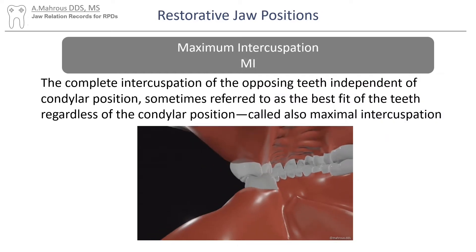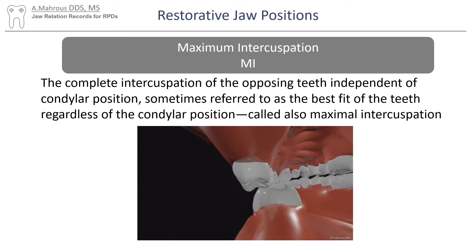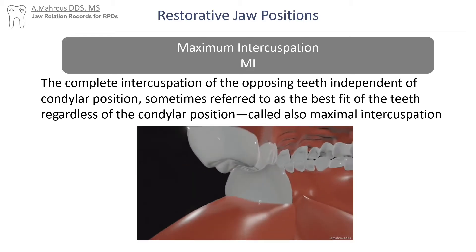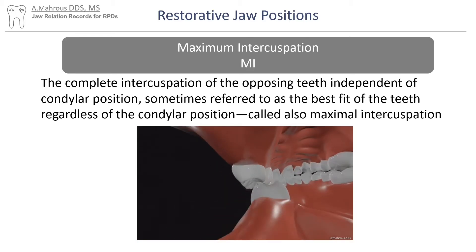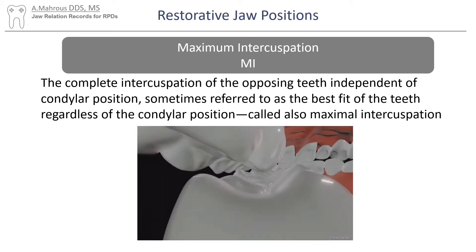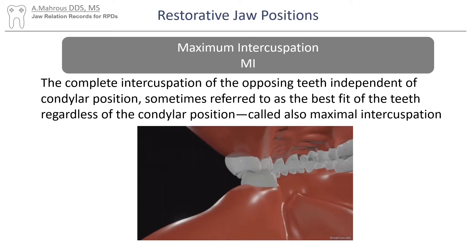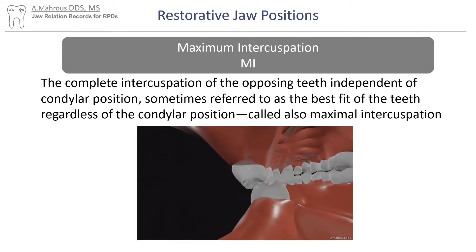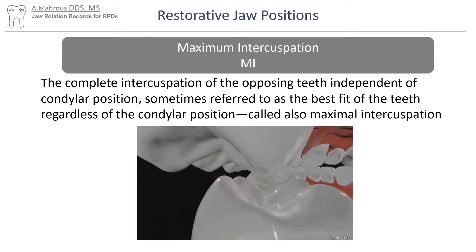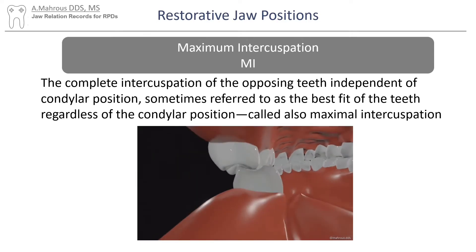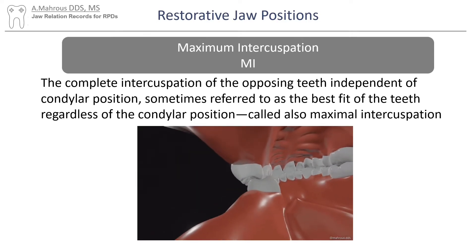Maximum intercuspation, or MI on the other hand, is the complete intercuspation of the opposing teeth independent of condylar positions. This is sometimes referred to as the best fit for the teeth regardless of condylar position.